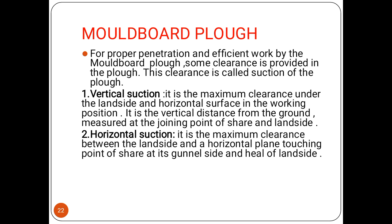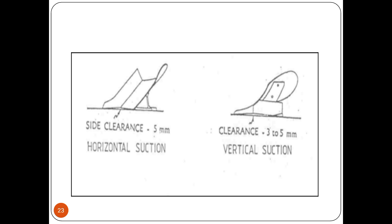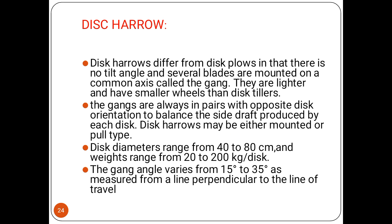For the MB plow, clearance is important for proper penetration and efficient work. Vertical suction is the maximum clearance under the landside and horizontal surface in working position — it is the vertical distance from the ground measured at the joining point of the share and landside. Horizontal suction is the maximum clearance between the landside and horizontal plane touching point of the landside. The disk harrow differs from the disk plow in that there is no tilt angle; several blades are mounted on a common axis called the gang, and they are lighter and have smaller disks.